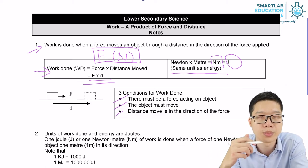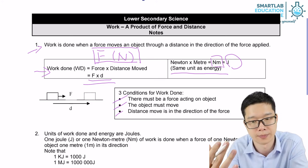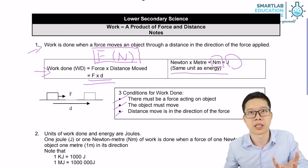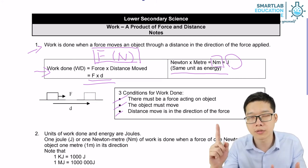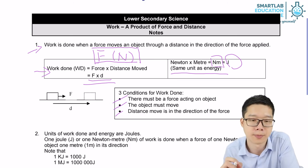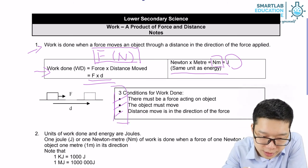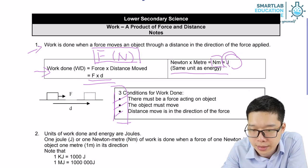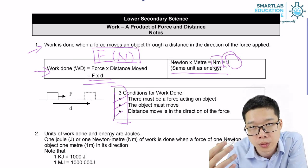There must be a force. The object must be moving. The direction of the force and the direction of the object moving must be the same. When you have the three conditions, you can calculate work done. And work done is in Newton-meters or joules.